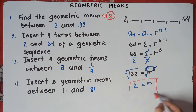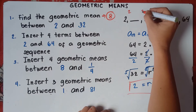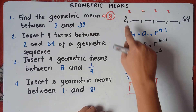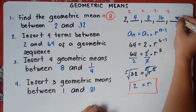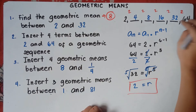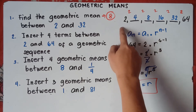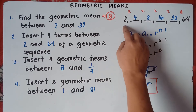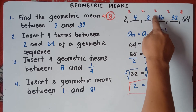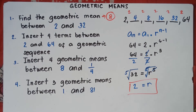Now that we have the common ratio of 2, we can build the sequence: 2, times 2 gives 4, times 2 gives 8, times 2 gives 16, times 2 gives 32, times 2 gives 64. To verify, divide each term by the previous: 4 divided by 2 is 2, 8 divided by 4 is 2, 16 divided by 8 is 2 — the common ratio checks out. In geometric sequence, we use multiplication and division. So the answer is confirmed.